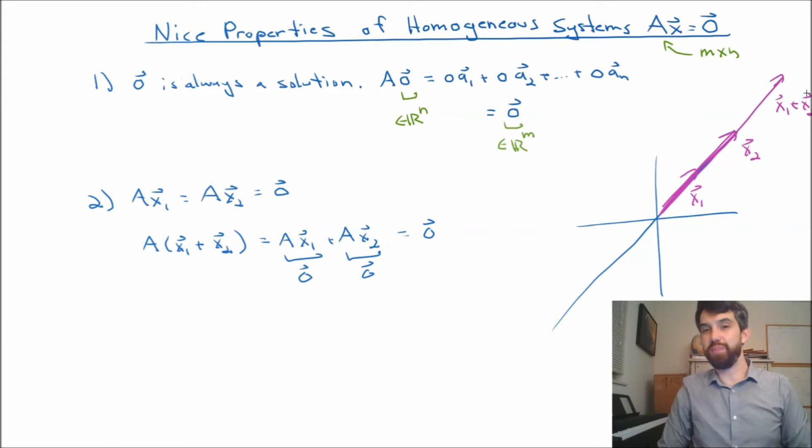But geometrically, this makes sense. If I've got two vectors on a line, then their sum is also going to be on a line. So algebraically and geometrically, it makes sense that we can add homogeneous solutions and they stay on the line.